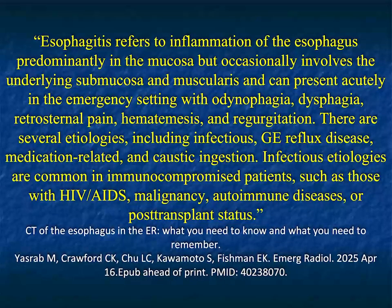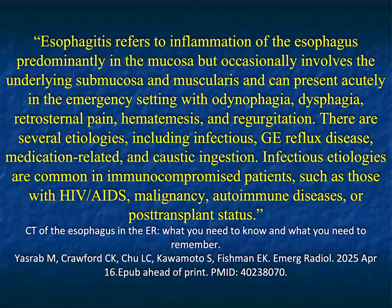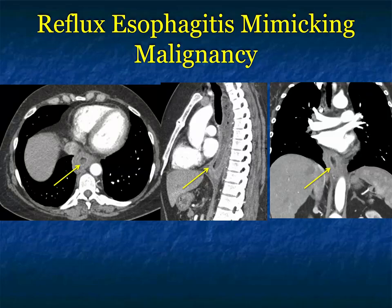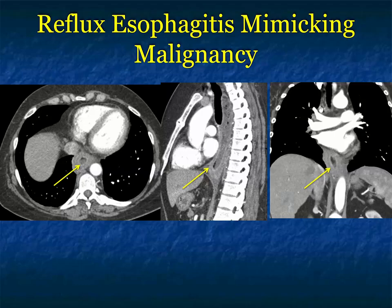Esophagitis is inflammation of the esophagus that can present with severe chest pain. There are a range of causes — from reflux, which is very common, to infection, certain medications, or caustic agents like detergent. Immunosuppressed patients — HIV patients, those with autoimmune diseases, post-transplant, or on chemotherapy — are all at increased risk. With esophagitis, we talk about thickening of the esophagus, which can be focal or long. One challenge is that diffuse thickening can be difficult to distinguish from malignancy — they can look very similar, and endoscopy will be necessary.